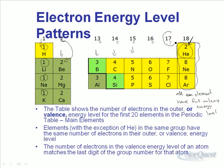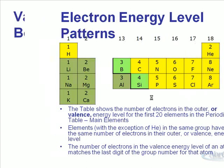So the halogens, group 17, all have 7 electrons in their valence energy level. This goes on further down the periodic table as well, but right now we're just looking at those first 20 elements.